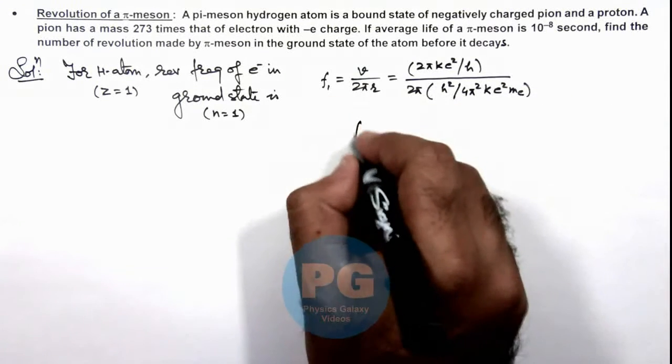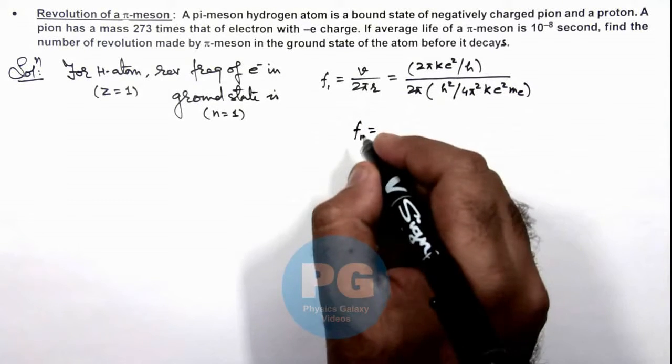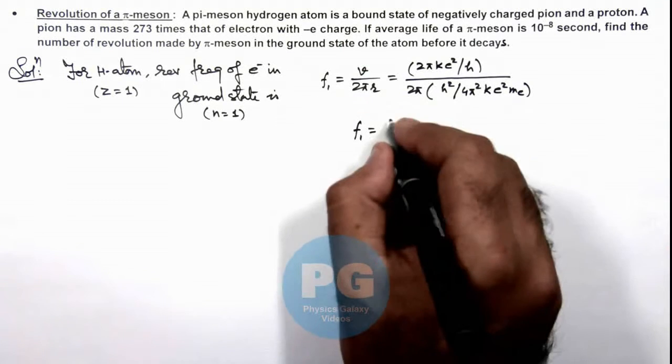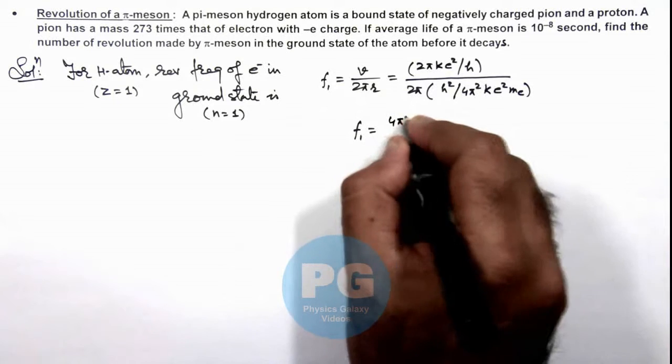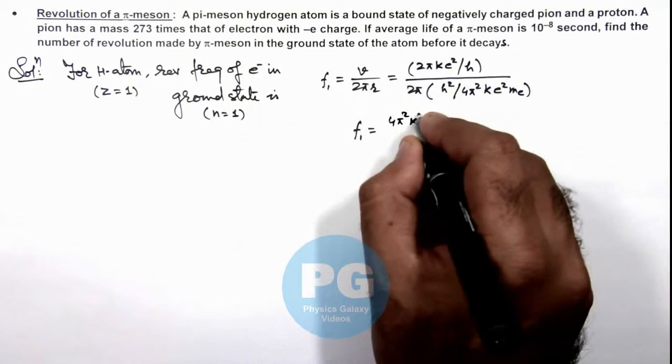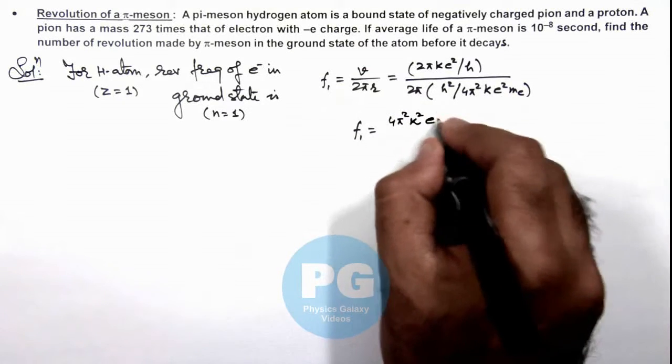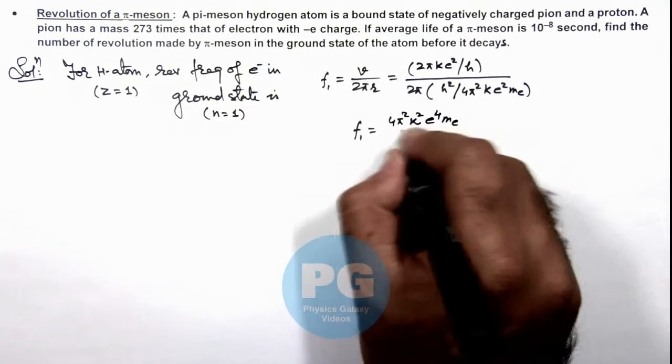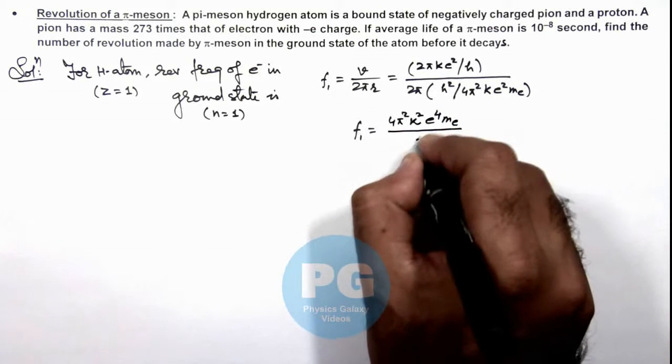On simplifying, the frequency in first orbit for revolution of electron we are getting is 4π²k²e⁴m_e/h³.